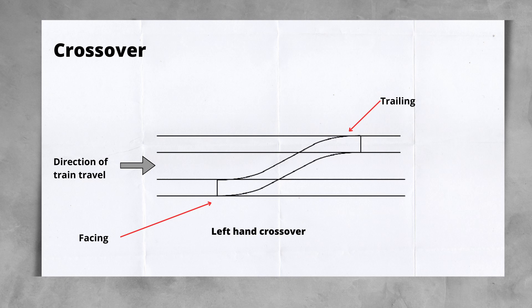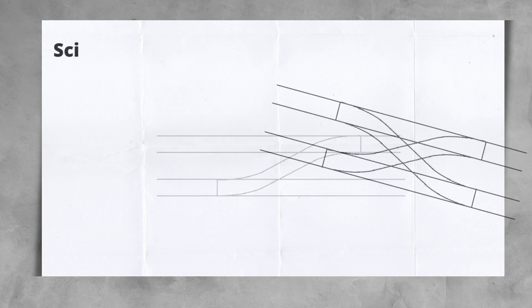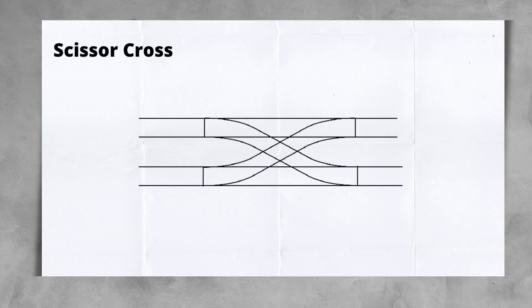In layouts where both lines have different directions of travel, or are bi-directional, both sets of points can be facing and trailing. This designation can be used to describe the type of movement occurring. An expansion on the standard crossover is the scissors, which is in effect two crossovers overlaid, forming an X, or scissor-like looking layout.